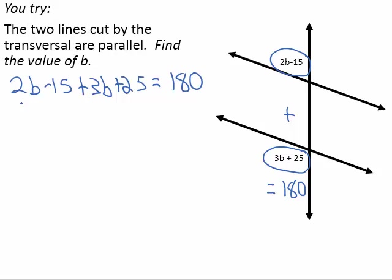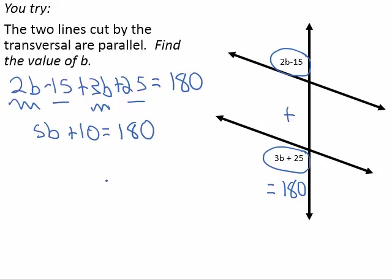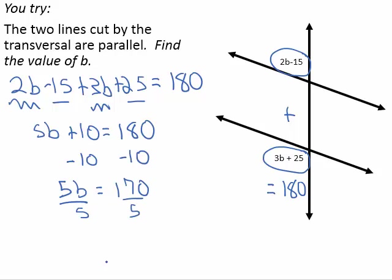We combine our like terms. 2b plus 3b gives us 5b. Negative 15 plus 25 gives us plus 10, equal to 180 degrees. If we subtract 10 from both sides, we get 5b is equal to 170. Divide both sides by 5 to get b by itself, and we get b is equal to 34.